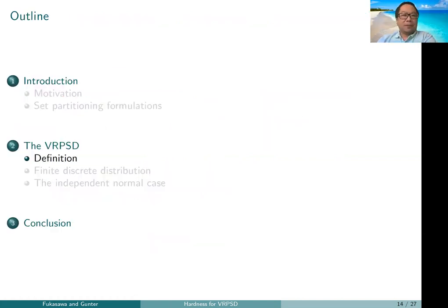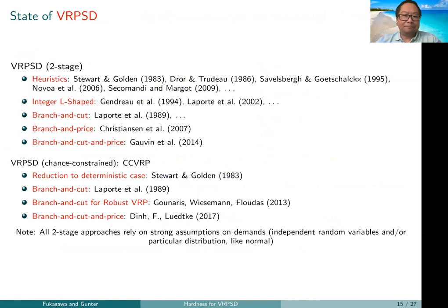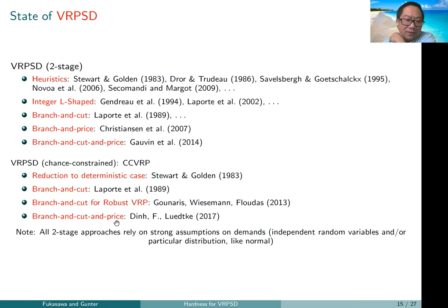Now let's look at the VRP with stochastic demands — particularly the two-stage version. For the two-stage version, there have been several heuristics, problem formulations based on regular edge formulations, and formulations based on exponential numbers of variables. Pretty much all exact two-stage approaches rely on strong assumptions on the demand: either independent random variables or a particular distribution like normal, and often both.